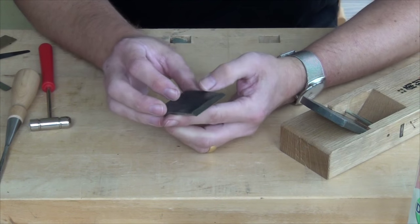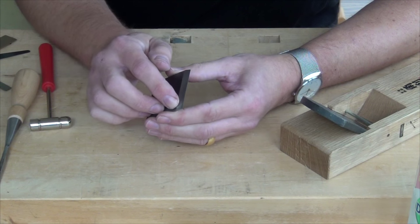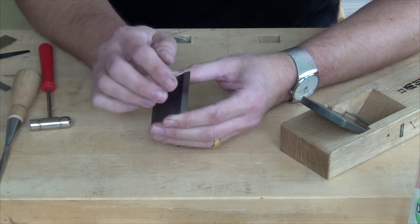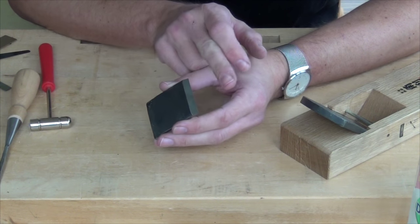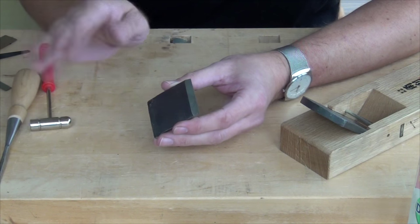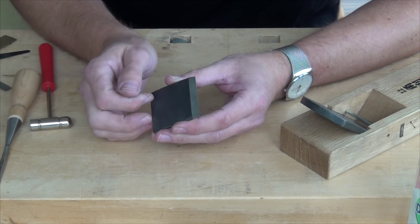So now the only thing I want to do to the chip breaker is to polish this front bevel and to make sure it's nice and sharp on the front so that any shavings coming off the blade will skip off and come off over the top of the chip breaker and not clog it up.